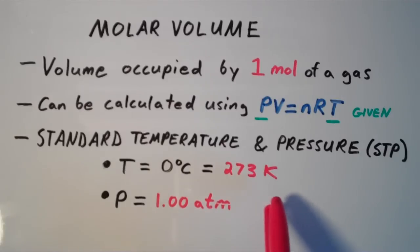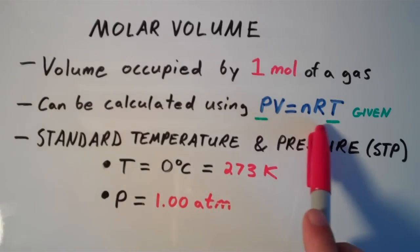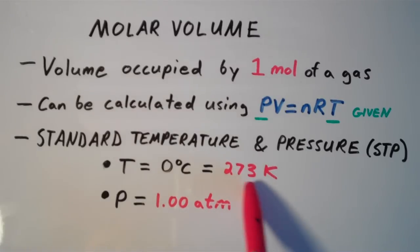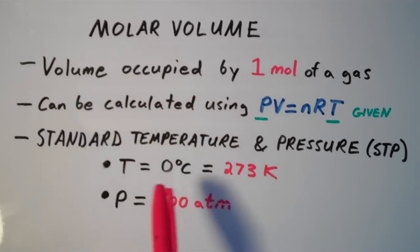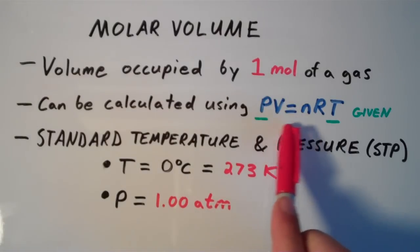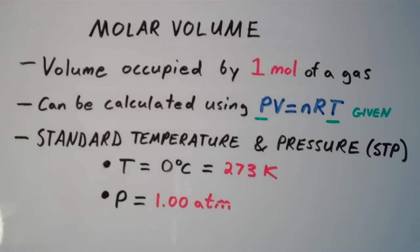I put the 273 Kelvin in red because that's the one that you're going to be using when you use PV equals nRT. Remember, always use absolute temperatures, never relative temperatures. So never use the Celsius temperature when using this equation. And so that's the temperature. And the pressure at STP is 1.00 atmospheres.